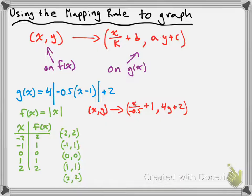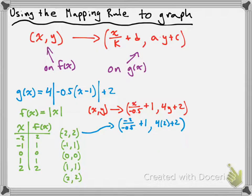Let's take the first point. I substitute (−2, 2) into my mapping rule: x becomes negative 2 over negative 0.5 plus 1, and y becomes 4 times 2 plus 2. Negative 2 divided by negative 0.5 is 4, plus 1 is 5. And 4 times 2 plus 2 is 10. So the point (5, 10) is on my transformed function.